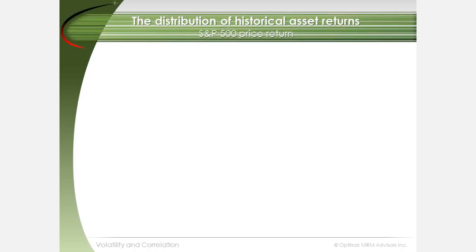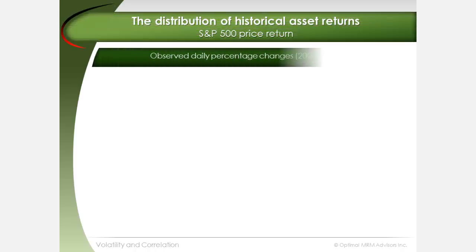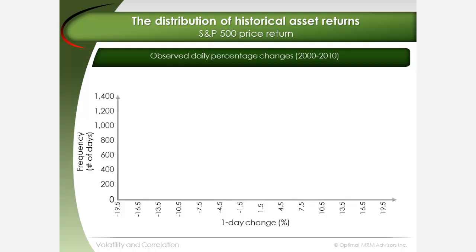We can graph as a histogram daily changes in the S&P 500 for a 10 year period from 2000 to 2010. Note the approximate bell shape of the distribution of these changes in the S&P 500 over this 10 year period.